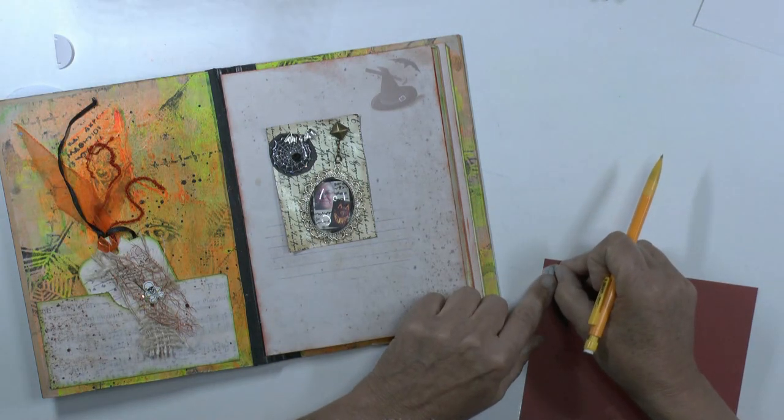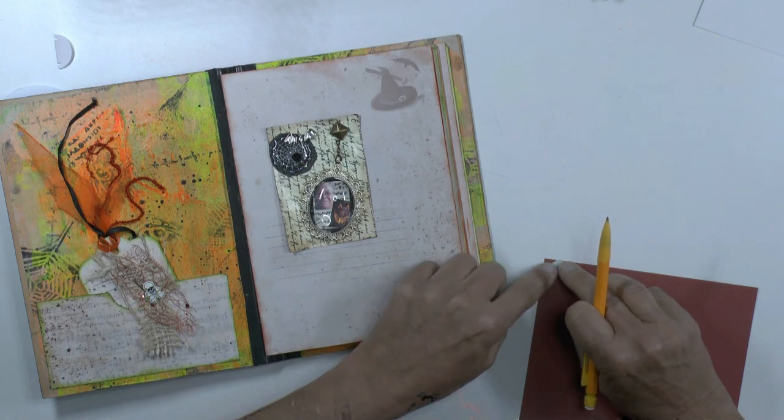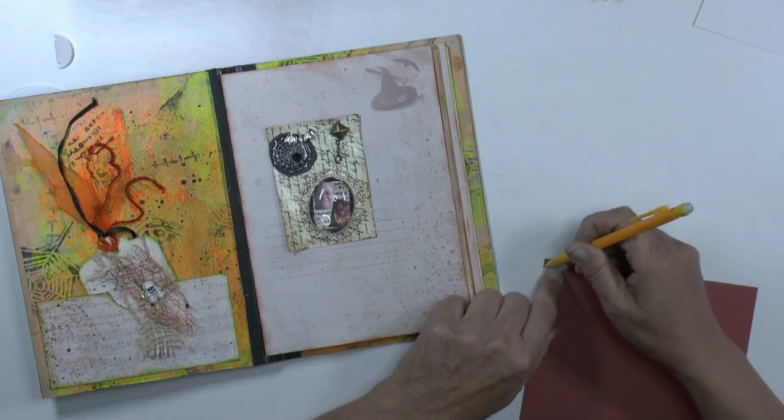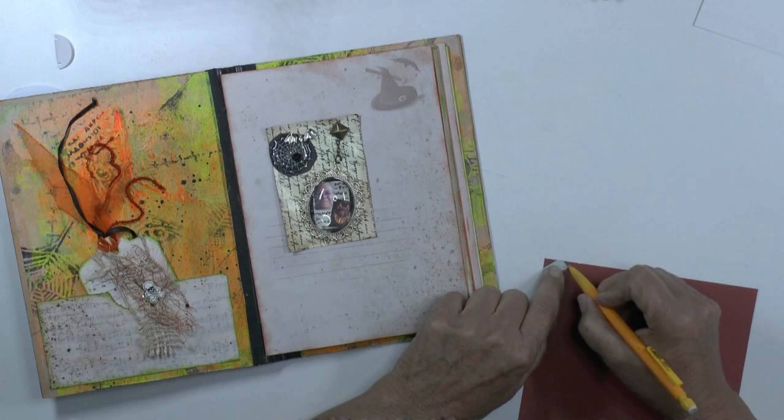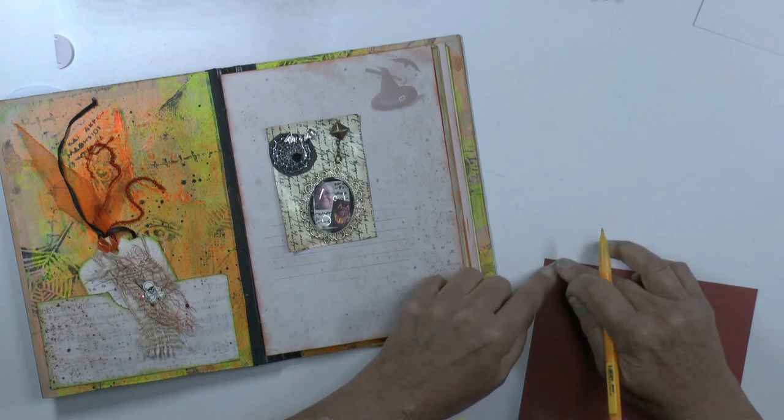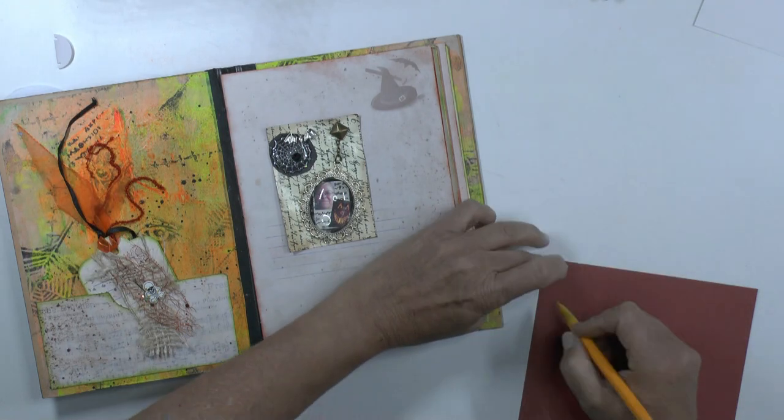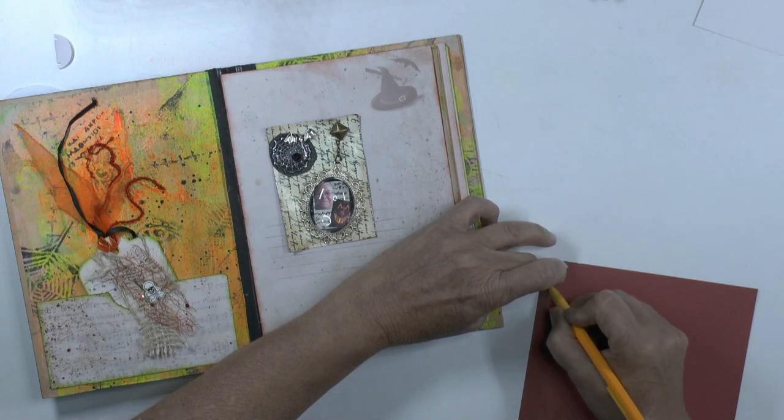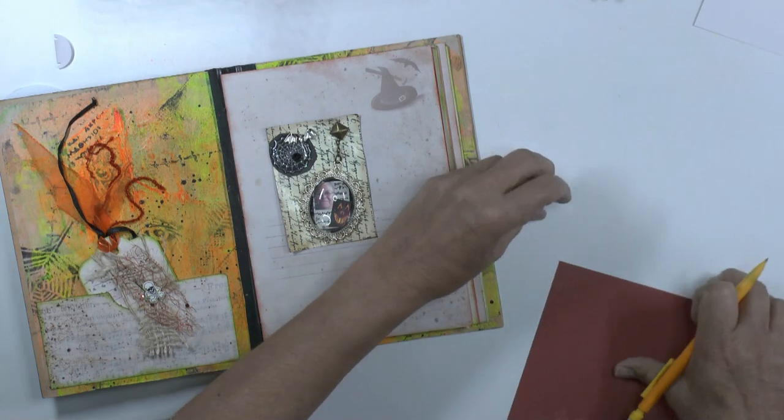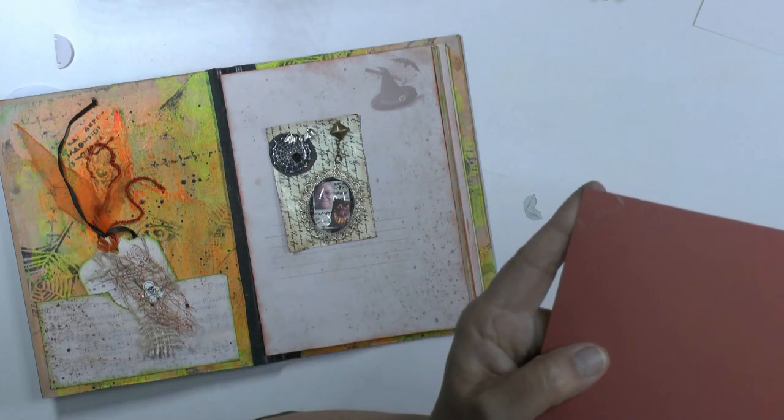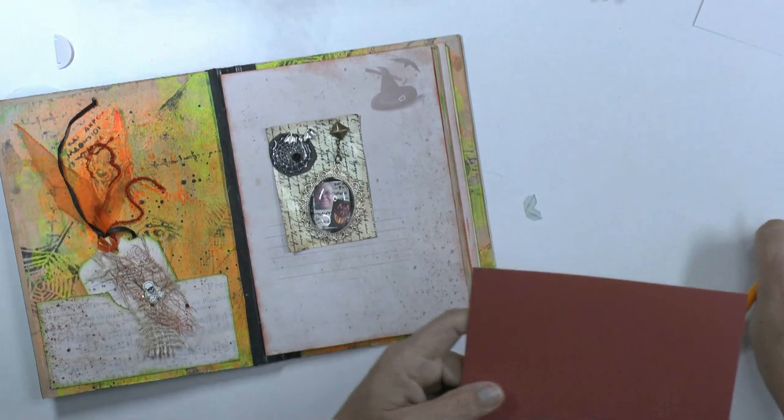I will draw around my... how do we call it? We call it shabloon or mall. Well, it's an example and you can lay it on and trace it. Can you see it? Yeah, and I will cut that out.